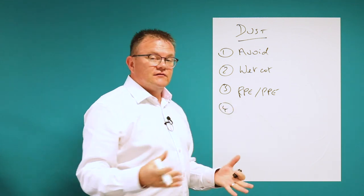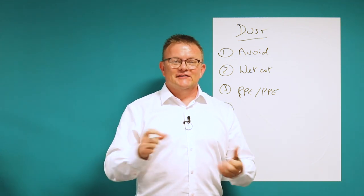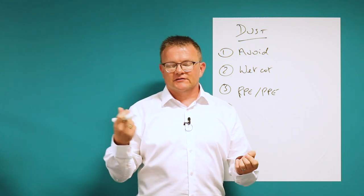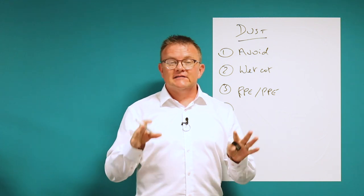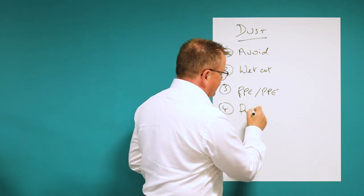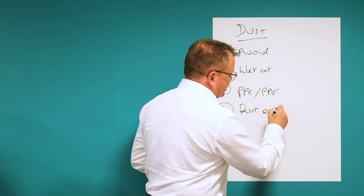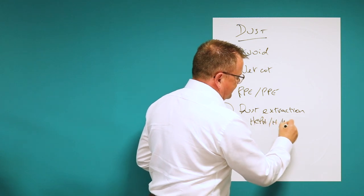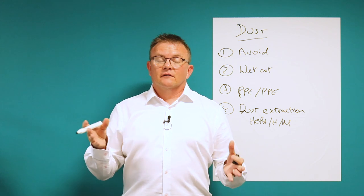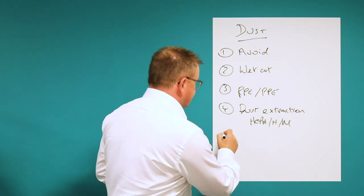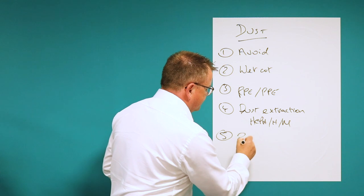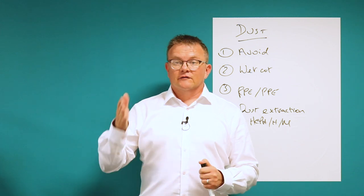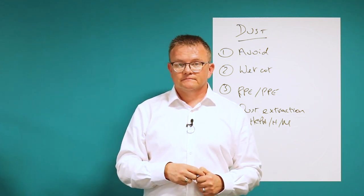Something that has changed in the industry is that using the dust bag on a cut-off saw or circular saw is no longer acceptable — you now need proper dust extraction that is HEPA filtered and rated high or medium in extraction. With anything you do, there should be a risk assessment, and you must implement the controls identified from the hazards, and review and train people in that risk assessment. Thank you.